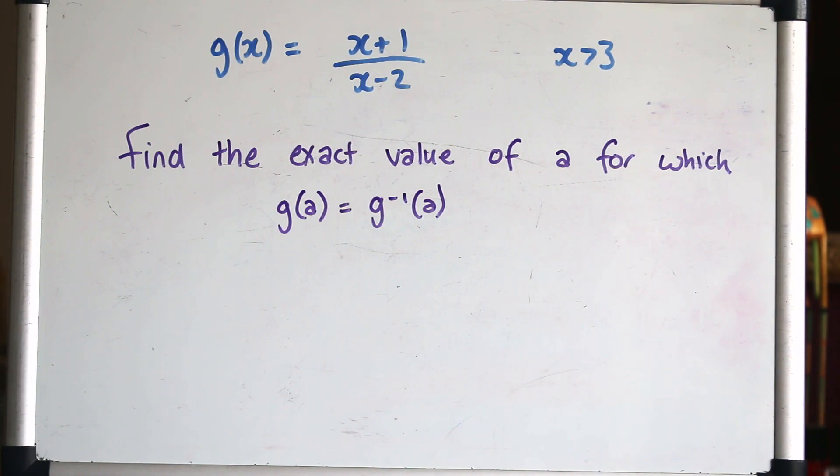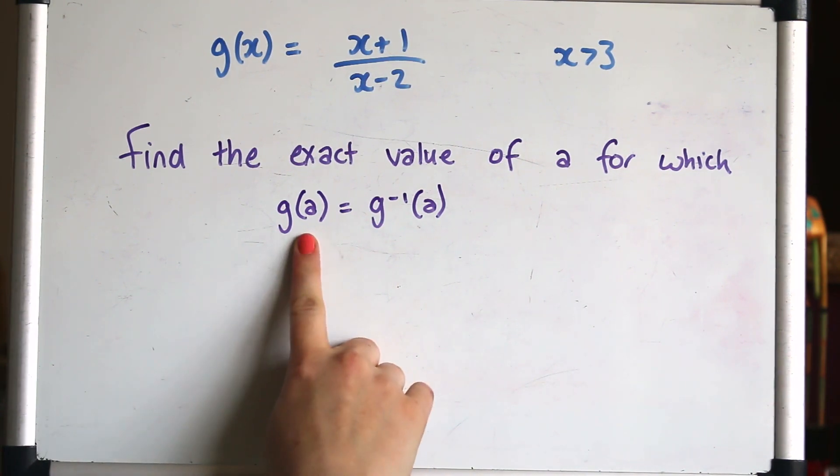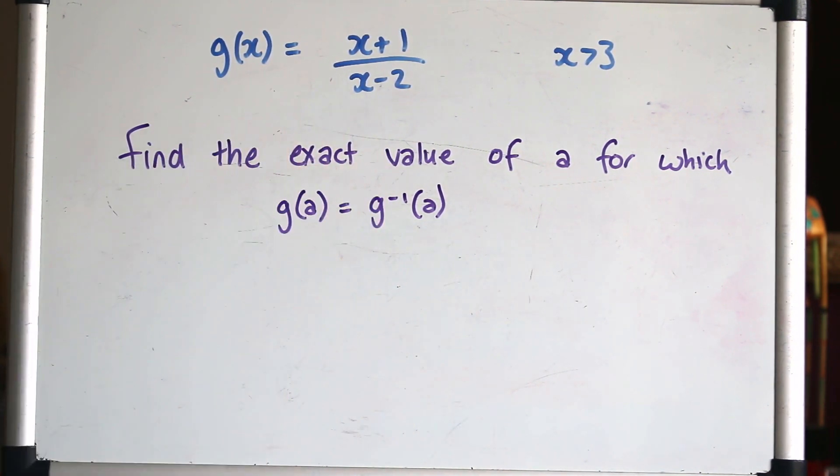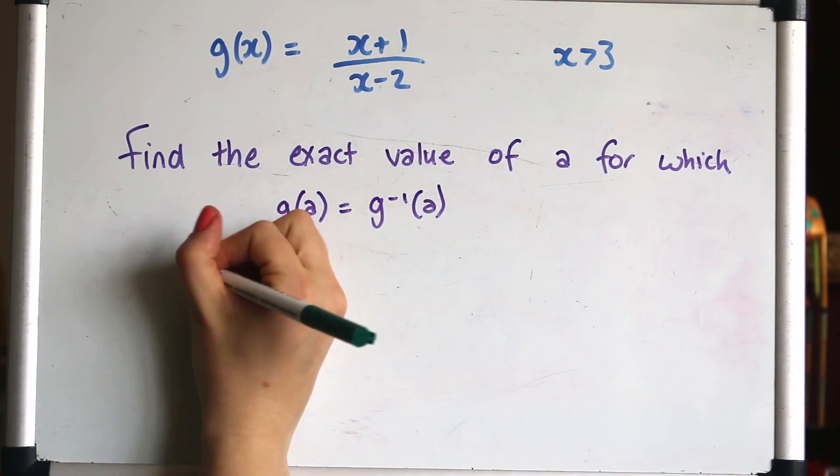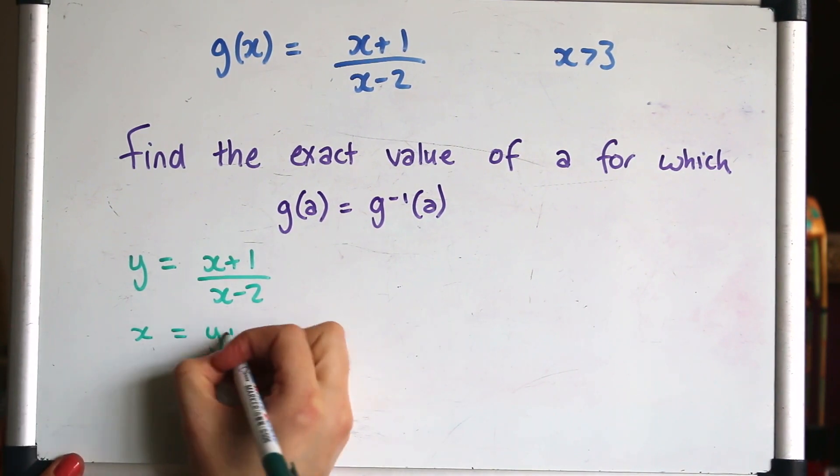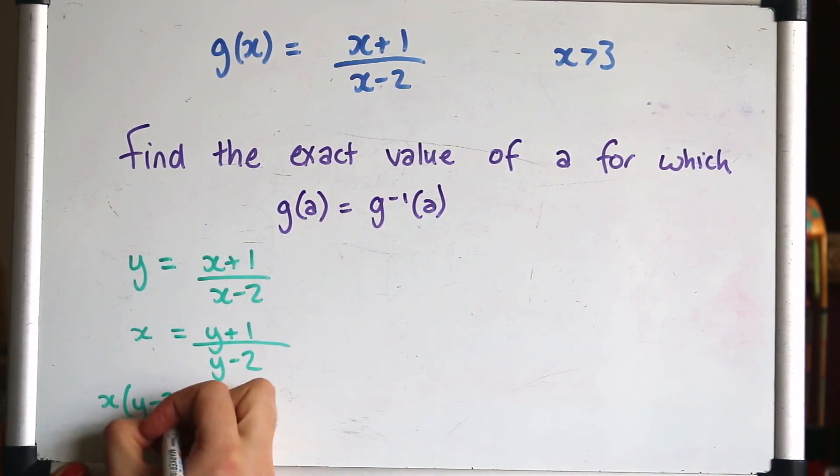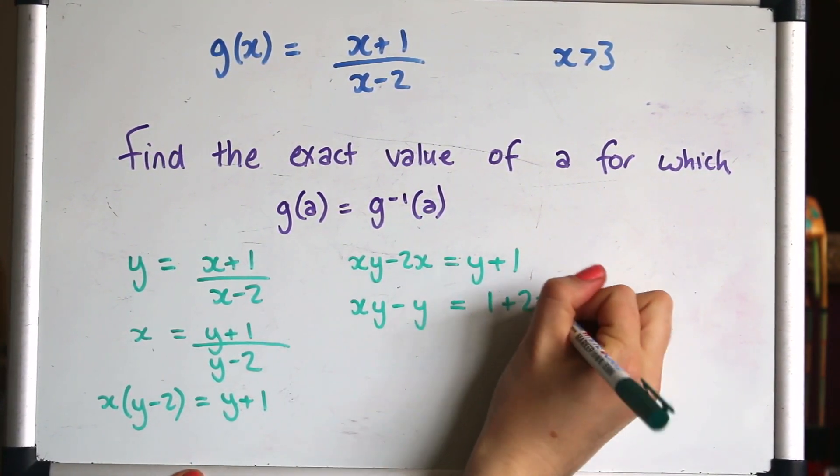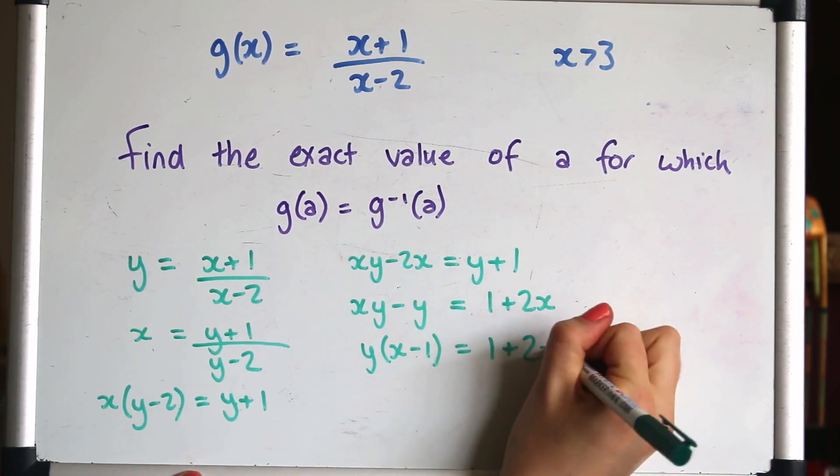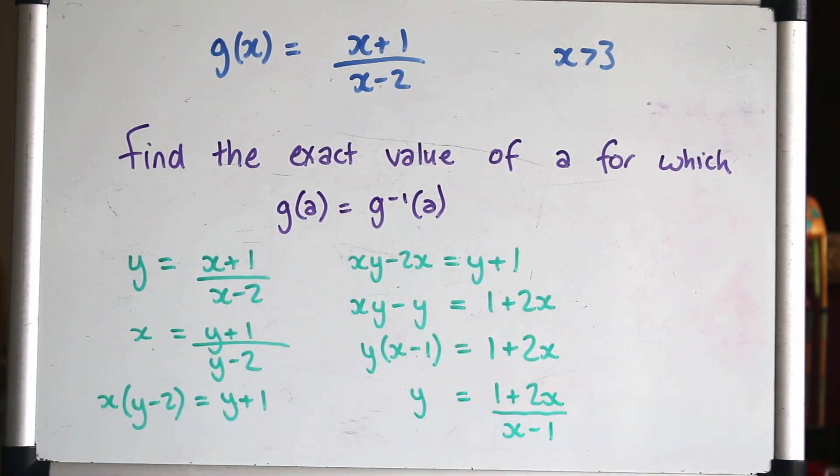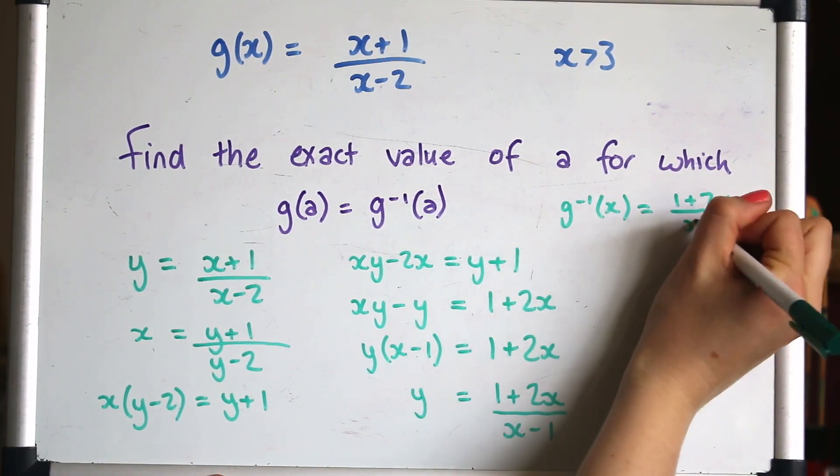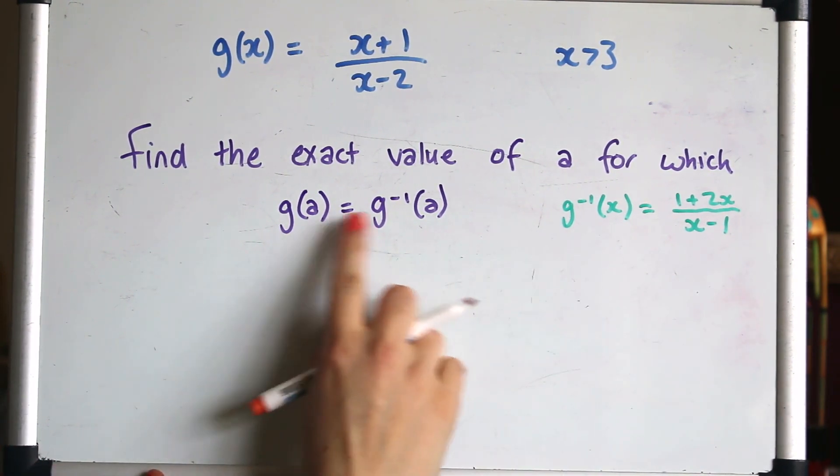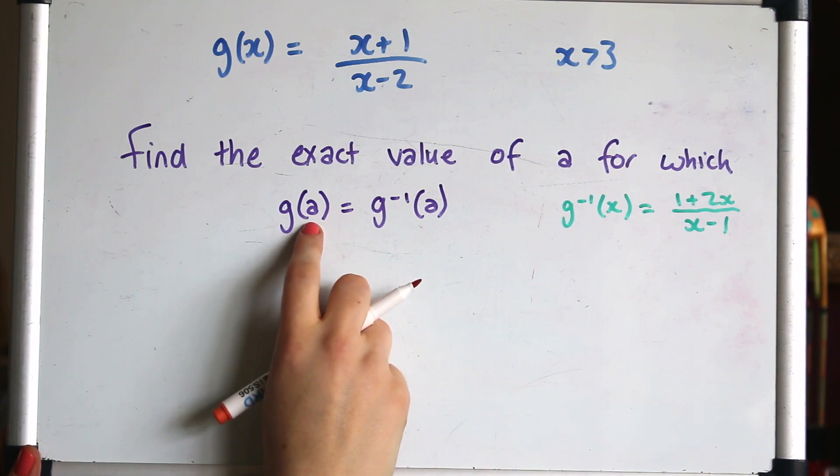There's one more part to this question. Let's take a look at that. Final part. Find the exact value of a for which the function equals the inverse function. So clearly we need to start by finding the inverse function of g. See if you can have a go at that. So the inverse function I found there. Now we're setting the function equal to the inverse function and we're replacing x with a.